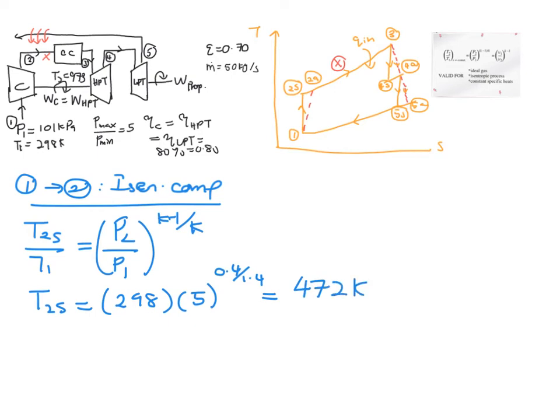Now you are given the isentropic efficiency of your compressor, which is 0.8. So you're going to consider your actual value over here. This actual value is important in solving the three questions that have been asked. So let's